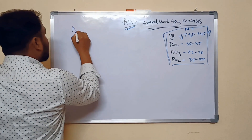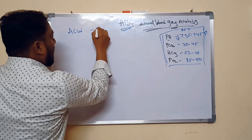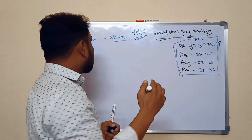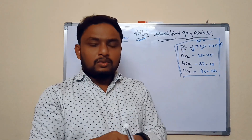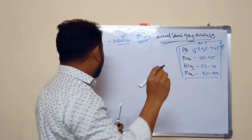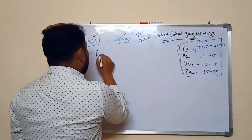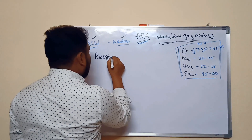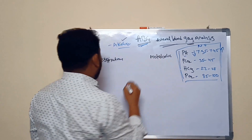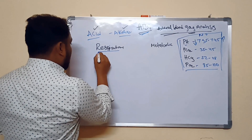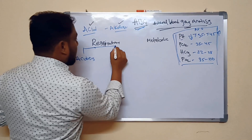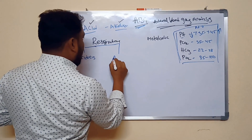In the ABG we mainly look at acid levels and alkalosis levels — whether it is acidosis or alkalosis. There are mainly two components: the respiratory component and the metabolic component. In the respiratory component there are two things: respiratory acidosis and respiratory alkalosis. In the metabolic component there is also metabolic acidosis and metabolic alkalosis.